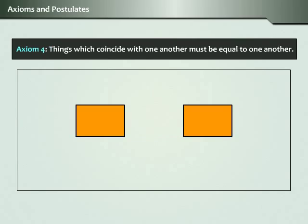Axiom 4: Things which coincide with one another must be equal to one another. This means that if two geometric figures can fit completely one into the other, then they are essentially the same.